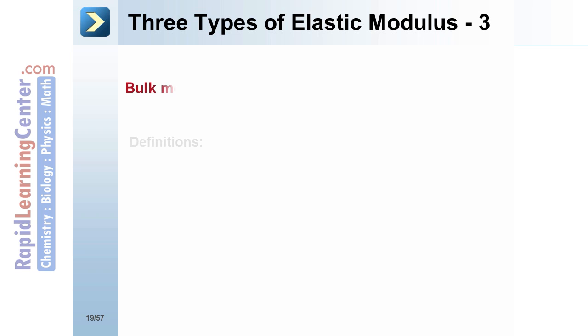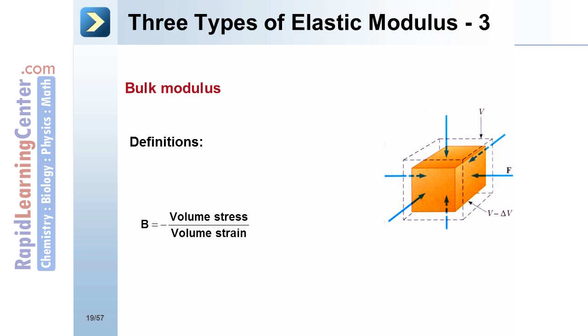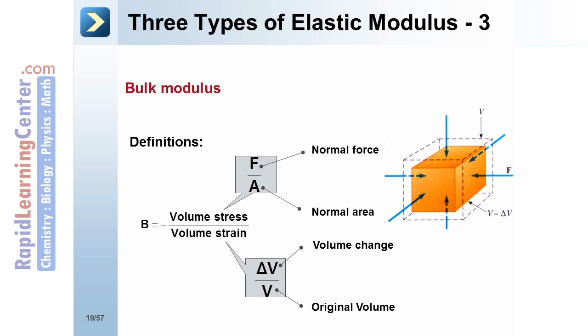And finally, the bulk modulus, which refers to volume. The bulk modulus is defined as the volume stress over the volume strain. In this case, the volume stress is the normal force per area, and the strain is the change in volume divided by the original volume.